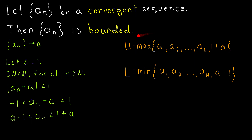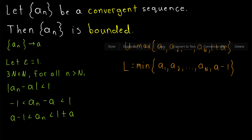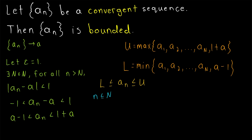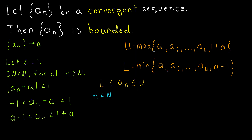And that's it. u is an upper bound on the sequence — it's greater than or equal to every term of the sequence — and l is a lower bound on the sequence — it's less than or equal to every term of the sequence. So we have that l is less than or equal to a_n, and a_n is less than or equal to u, for every term of the sequence a_n. When n is less than or equal to big N, u is the maximum of a set that contains all of those terms, so certainly u is greater than or equal to those. Similarly, l is the minimum of a set containing all of those terms, so certainly l is less than or equal to all of those terms.